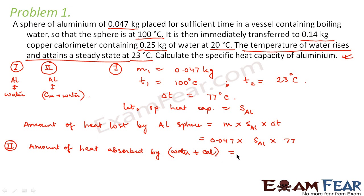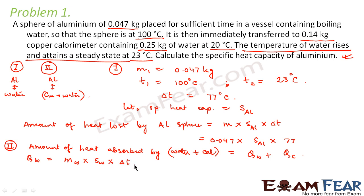The amount of heat absorbed by the water plus calorimeter equals the heat absorbed by the calorimeter plus the heat absorbed by the water. The heat absorbed by water is: mass of water into specific heat capacity of water into change in temperature. The mass of water is 0.25 kg, specific heat of water is 4.18 into 10 to the power 3 joule per kg per kelvin. The initial temperature of water was 20 degree Celsius and the final temperature was 23 degree Celsius.